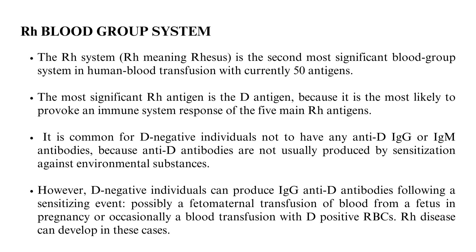The RH system is the second most significant blood group system in human blood transfusion, with currently 50 antigens. The most significant RH antigen is the D antigen, as it is most likely to provoke an immune system response. It is common for D-negative individuals not to have any anti-D IgG or IgM antibodies, since anti-D antibodies are not usually produced by sensitization against environmental substances. However, D-negative individuals can produce IgG anti-D antibodies following a sensitizing event, possibly a fetomaternal transfusion during pregnancy or a blood transfusion with D-positive RBCs. RH disease can develop in these cases.